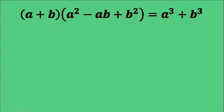The quantity a plus b times the quantity a squared minus ab plus b squared is just the same as a cubed plus b cubed. As you can see here, the answer is just the given binomial and we just put cube to each of the terms.